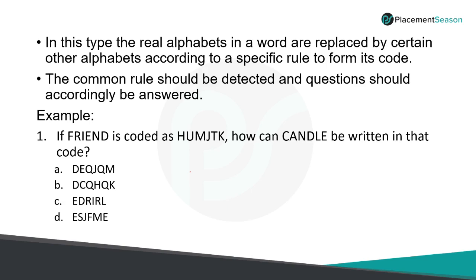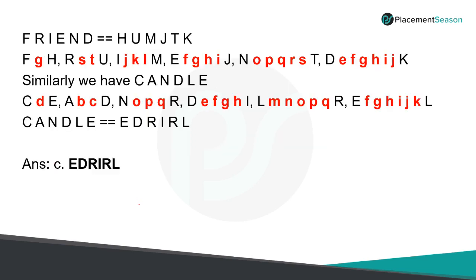Let's see a few examples to make things even more clear. Here we have: if FRIEND is coded as HUMJTK, how can CANDLE be written in that code? We have to find the relationship between these letters, then get a format which we should apply to this word and find which of the given options is correct.